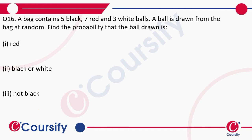A bag contains 5 black, 7 red, and 3 white balls. A ball is drawn from the bag at random. Find the probability that the ball drawn is red. First of all, the total number of balls is 5 plus 7 plus 3, that is 15.